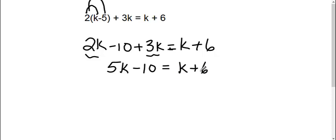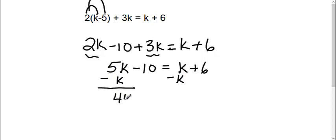Now that I've simplified and combined my like terms, I need to get my k's on one side. I like to keep mine positive, so I'm going to move this positive k to the other side. I'm going to subtract k on both sides. 5k minus 1k is 4k. I still have minus 10 equals — this side is canceled — I'm left with 6.